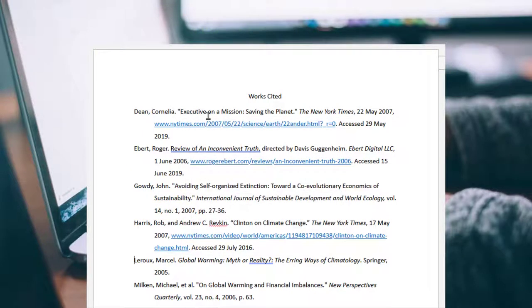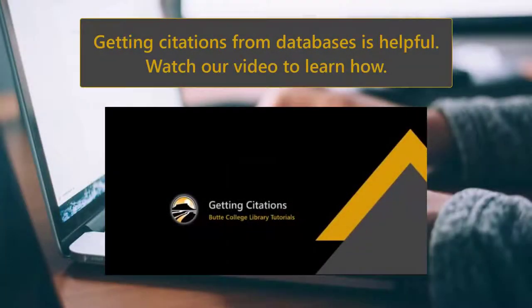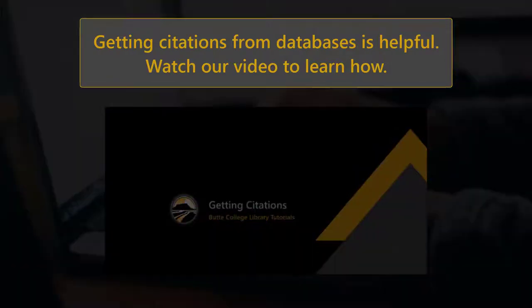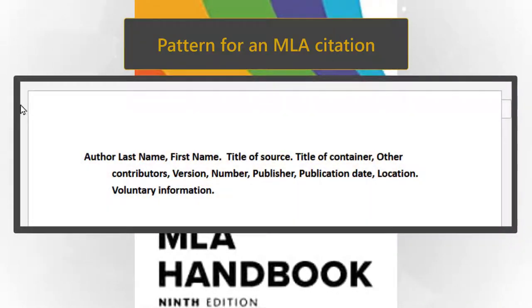You will often be able to get a full citation from a database or the library catalog without having to write it yourself. Check out our video on getting citations to learn how. A full citation includes at least the author, title, publisher, and date, and this is the basic pattern.